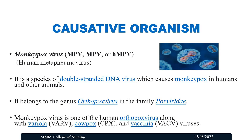The causative organism for monkeypox is the Monkeypox virus, also called MPV or HMPV. It is a species of double-stranded DNA virus which causes monkeypox in humans and other animals. It belongs to the genus Orthopoxvirus in the family Poxviridae. Monkeypox virus is one of the human orthopoxviruses, along with variola, cowpox, and vaccinia viruses.